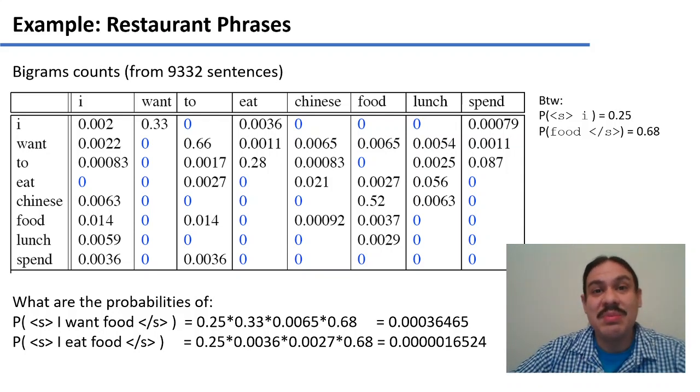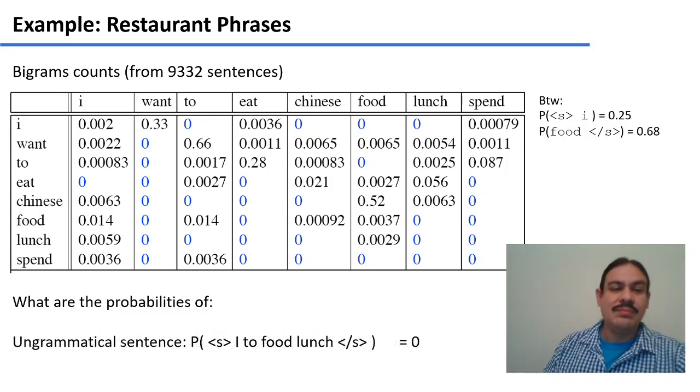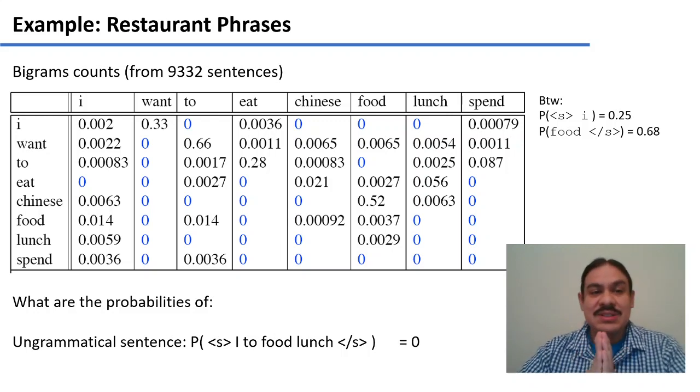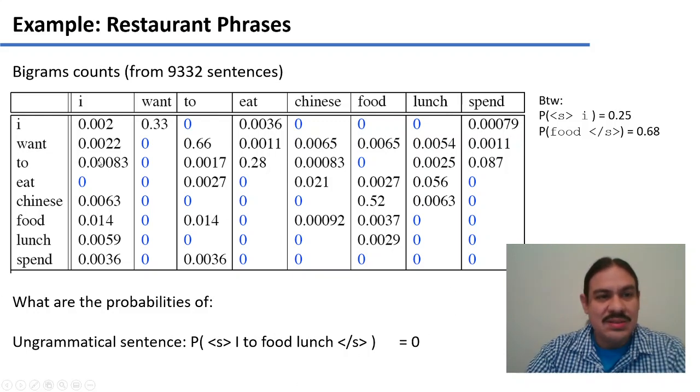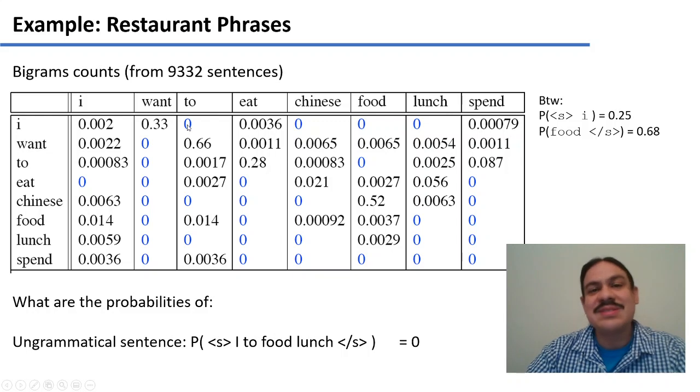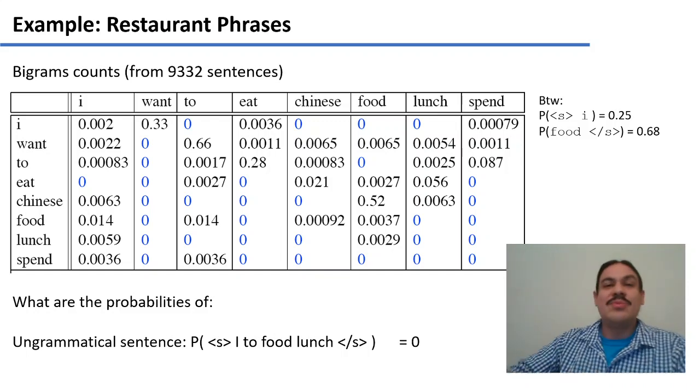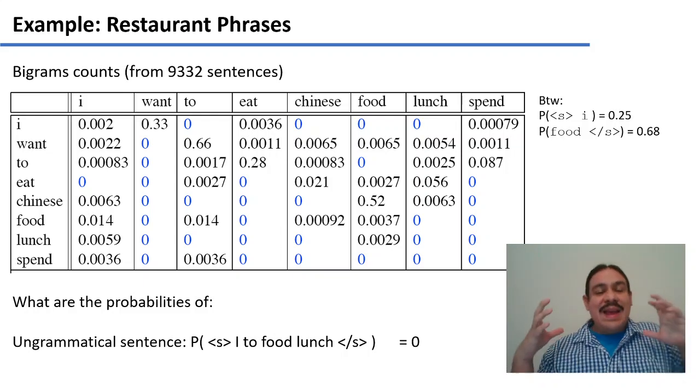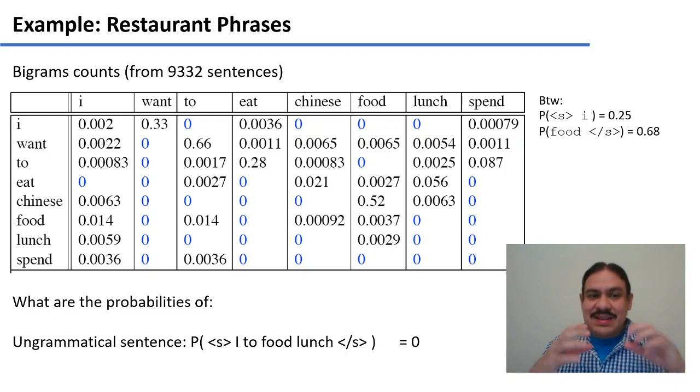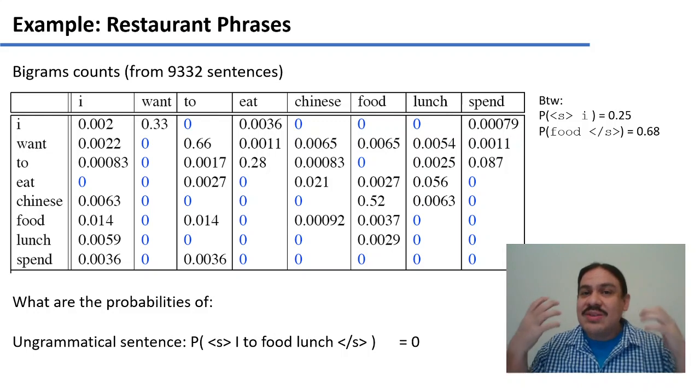So this is how you would calculate the probability of a sentence given a corpus. There are some sentences that would be ungrammatical, such as I to food lunch. This would not be a grammatical sentence of English, and its probability would be zero because one of the bigrams does not exist in the corpus. So I to is zero. There's nowhere in those 9,000 sentences where you have a sequence I to. So whatever the other elements are, they're multiplied by zero equals zero, which is the probability of that ungrammatical sentence.